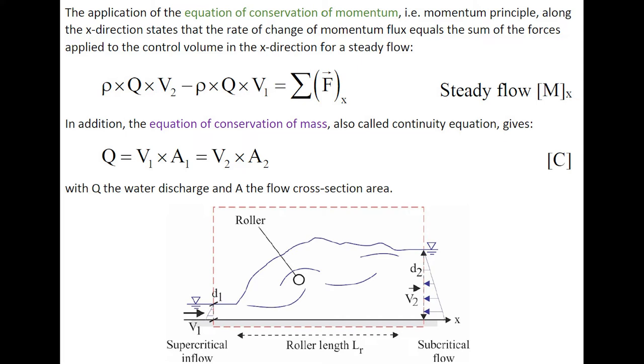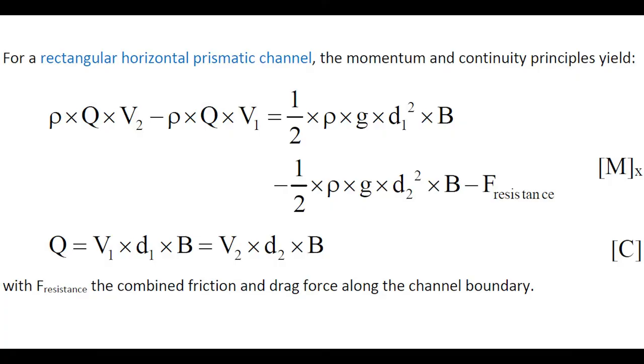Moreover, the equation of conservation of mass, or continuity equation, gives a relationship between the discharge and the velocity and cross-section area. For a rectangular horizontal prismatic channel, the momentum and continuity principle may be simplified as shown here, in which the resistance force is a combined friction and drag force along the channel boundary.